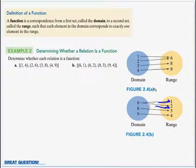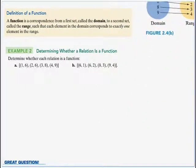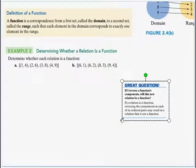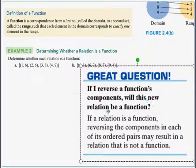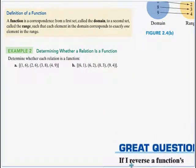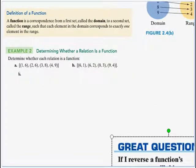If the relation is a function, reversing the components in each ordered pair may result in a relation that is not a function. That's exactly what we just saw: the original set 2A was a function, but when we reversed all the components, it was disqualified because of the repeated 6 in the domain.